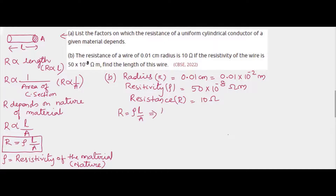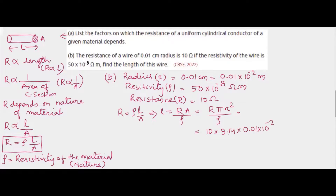We'll use the formula R = ρL/A, rearranged as L = R × A / ρ. Instead of area A, we write π r², so L = R × π r² / ρ. Putting in the values: R is 10, π is 3.14, radius is 0.01 into 10 to the power minus 2, squared, divided by 50 into 10 to the power minus 8.